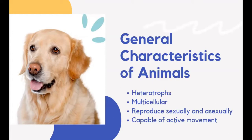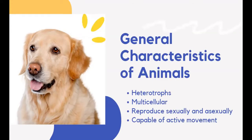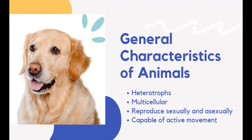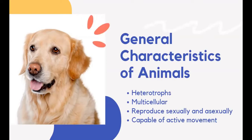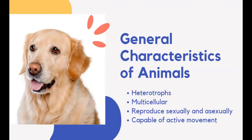Animals are also considered to be multicellular. Cells are the building blocks of living things. The simplest living things are made up of only one cell, while others are made of many cells. Cells provide structure for the body, take in nutrients, and carry out specific functions necessary to keep an organism alive.